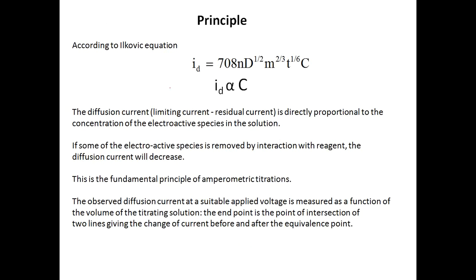The principle behind amperometric titration is based on the Ilkovic equation, which states that the diffusion current at the limiting current value is directly proportional to the concentration of the electroactive species. The diffusion current (limiting current minus residual current) is directly proportional to the concentration of electroactive species. If an electroactive species is removed by interaction with a reagent — for example, a metal ion that can undergo reduction at the electrode — the diffusion current will decrease.